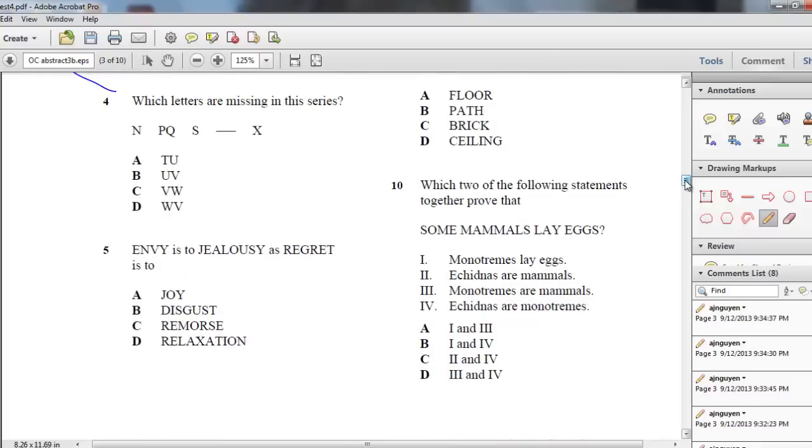The next question is question 10. Which two of the following statements together prove that some mammals lay eggs? This is a really interesting type of question because what you're trying to do is find two statements that together, even though they're saying totally different things, prove that the statement some mammals lay eggs is true. So how do you go about these types of questions?